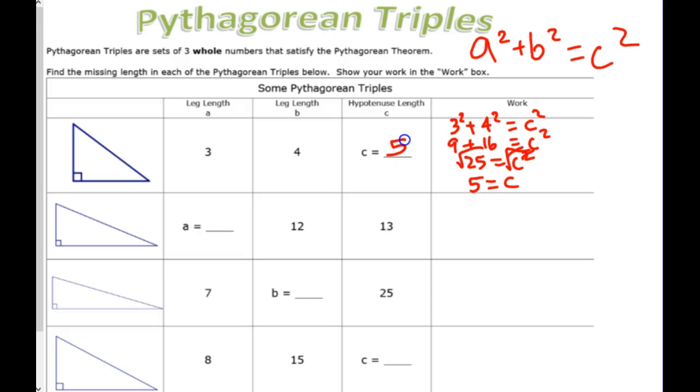So, C is 5. So, fill that in right here. So, the first Pythagorean triple that you are learning today is 3, 4, 5.